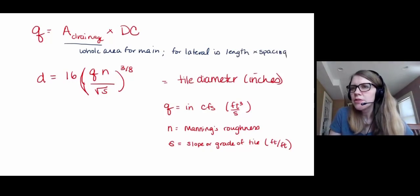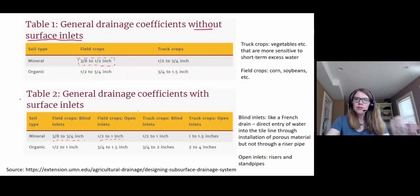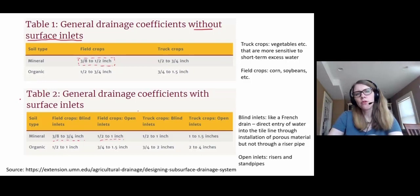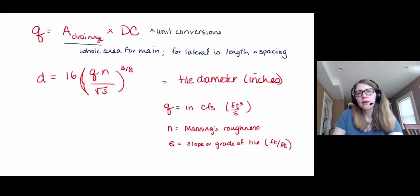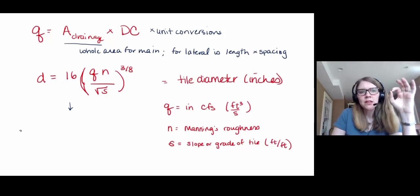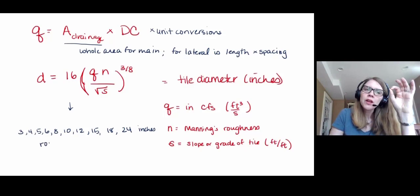And then we select the drainage coefficient based on what kind of soil type, what kind of crop, and what our surface drainage situation is. And then all that happens there is that we need to do unit conversions. And then this equation. And we're going to get inevitably some decimal answer. But in fact we need to keep in mind that you can only buy tile corrugated plastic tubing in commercially available diameters. That's 3, 4, 5, 6, 8, 10, 12, 15, 18, and 24 inches.